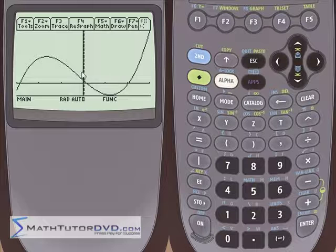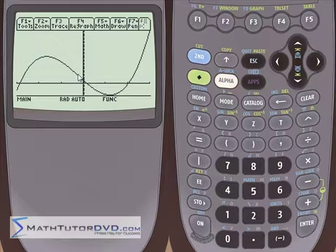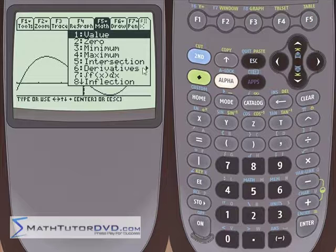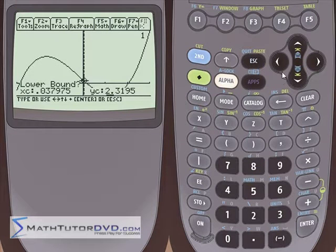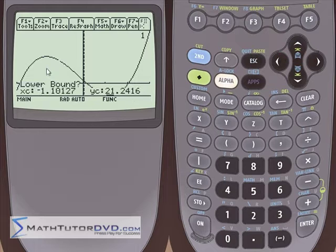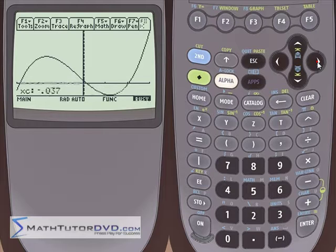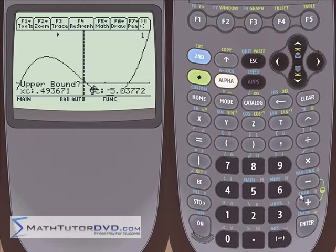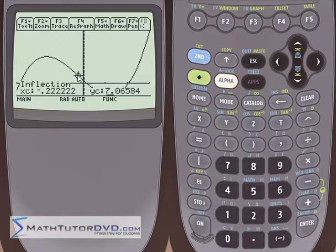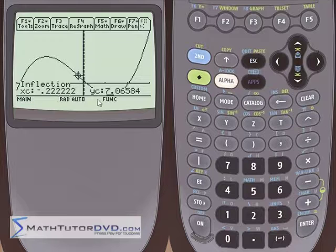The way you find it by hand is to find the second derivative of this function, set it equal to zero, solve for x, and you'll find that this value is whatever it is. But you can go in here to the math menu number eight for inflection and just give it a lower bound than an upper bound. I don't know exactly where it is but I know it's got to be somewhere between these two points so I hit enter here. Let it calculate and it finds the exact inflection point: x equals -0.22222, y equals 7.06. So this is the exact inflection point.